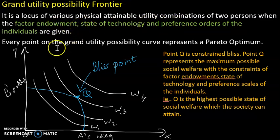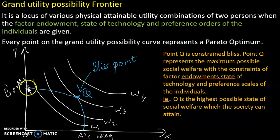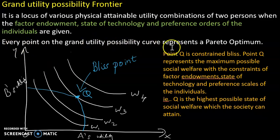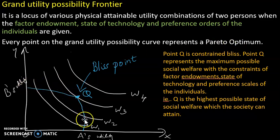These are the society's constraints. The Grand Utility Possibility Frontier is the blue line. The point where the social indifference curve is tangent to the Grand Utility Possibility Frontier is the point that maximizes welfare. That point is point Q, called the bliss point. Every point on the Grand Utility Possibility Frontier is Pareto optimal — one person's welfare can only increase if the other person is also better off.